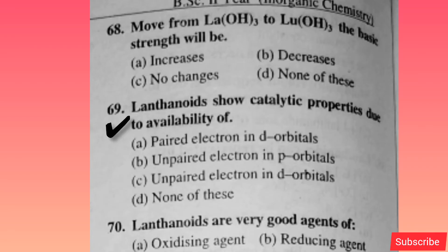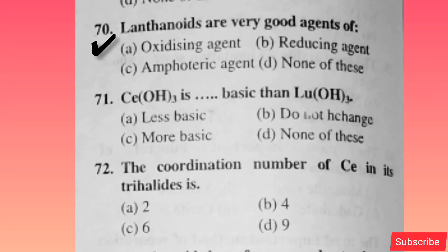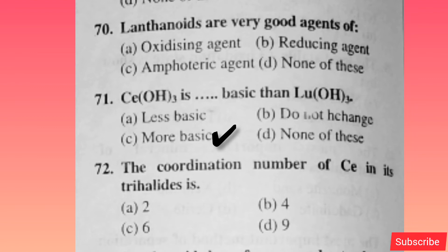Lanthanides show catalytic property due to availability of — option C is correct. Lanthanides are very good reducing agents — option B is correct. CeO(OH)3 is more basic than Lu(OH)3 — option C is correct.